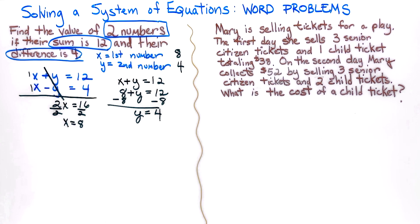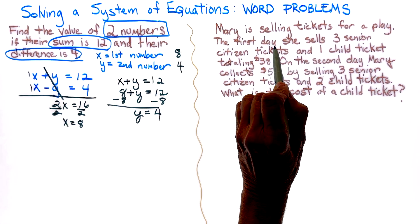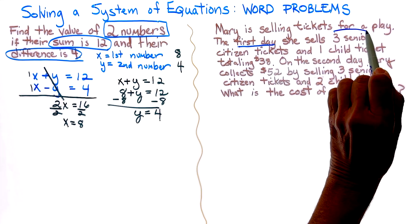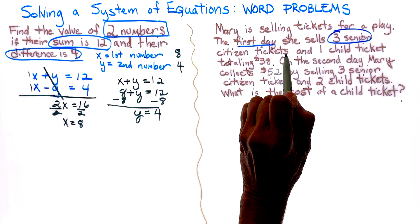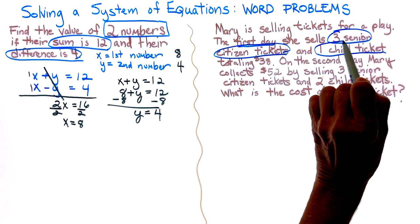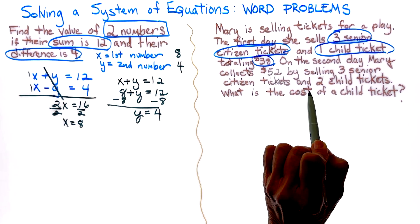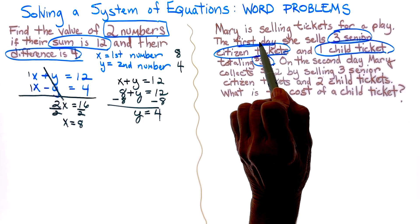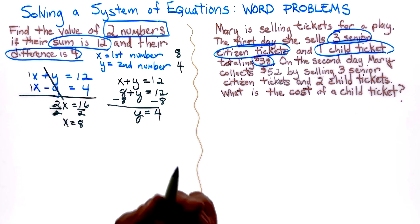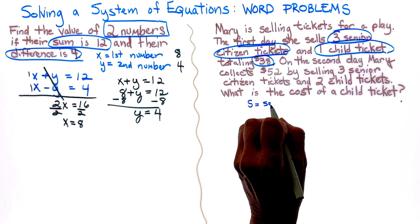So let's mark our text. Mary is selling tickets for a play. So they mentioned the first day, she sells three senior citizen tickets and one child ticket, and that totals $38. So that's the first day. So that is going to actually be my first equation, but first we need to define our variables. So S is equal to senior citizen.